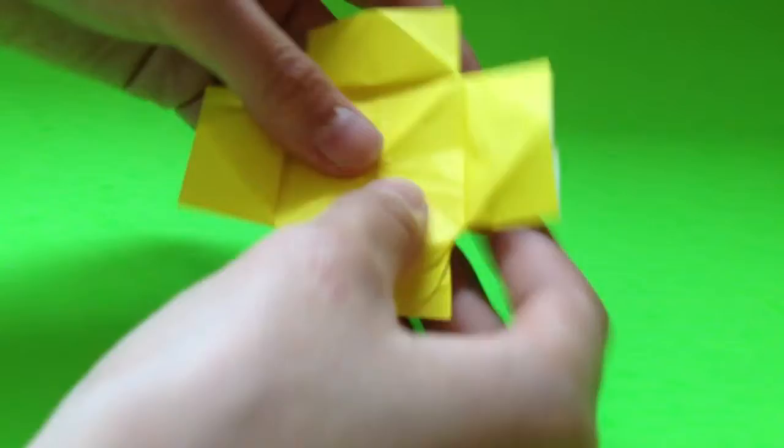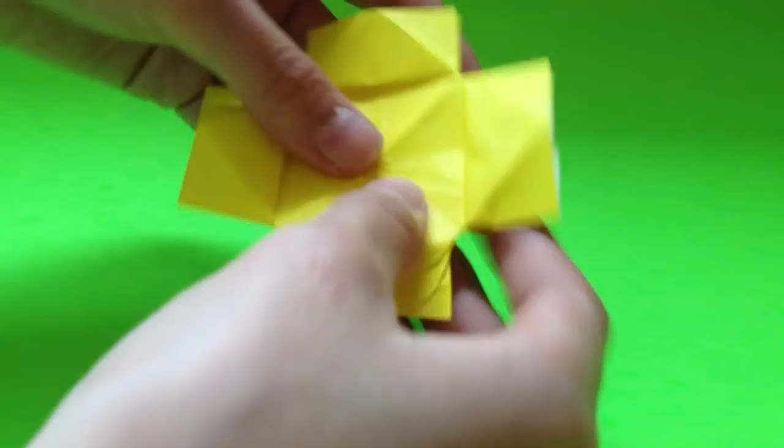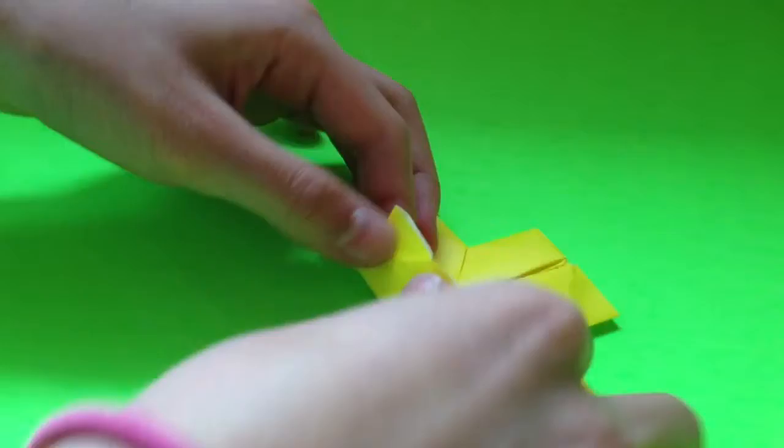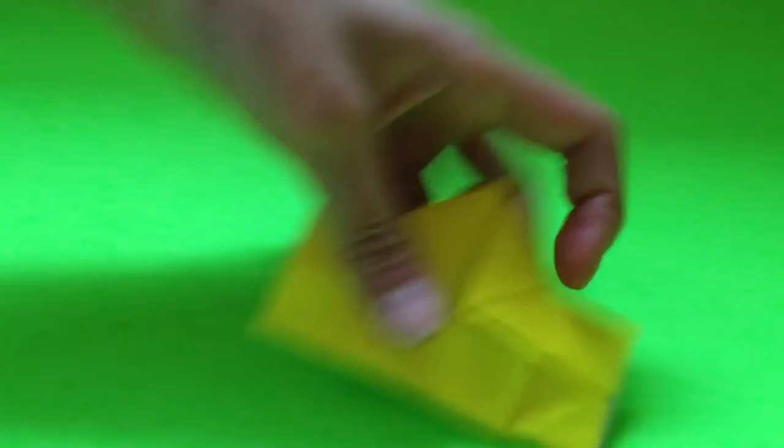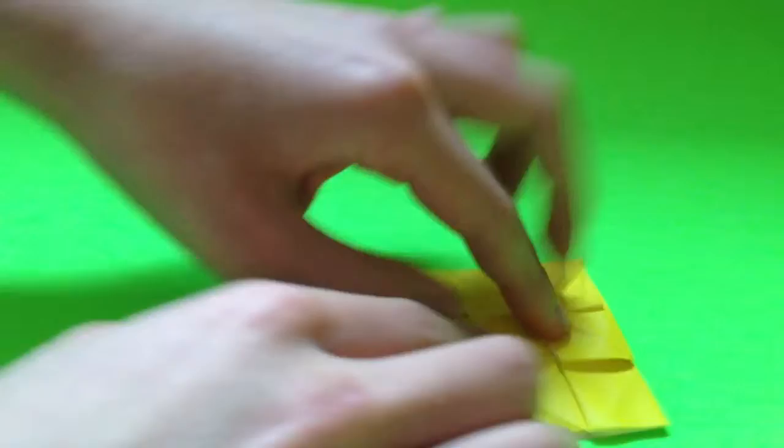Flip it over, and take one of these little rectangles, and fold over, and it should look like this. And do that two more times, and it should be the rectangles that are next to it.